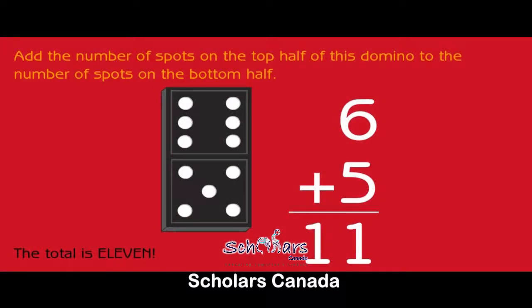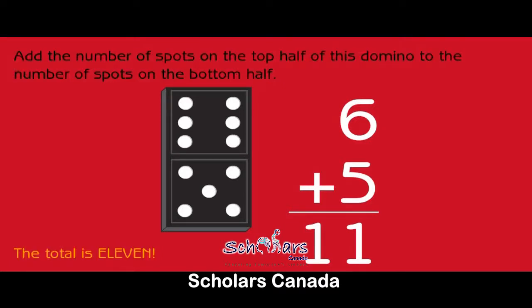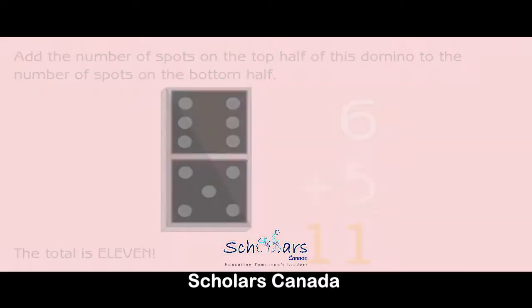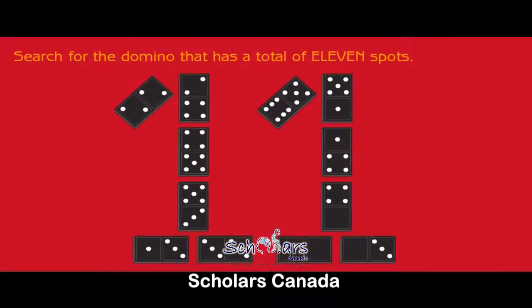Add the number of spots on the top half of this domino to the number of spots on the bottom half. The total is eleven. Six plus five equals eleven. Search for the domino that has a total of eleven spots.